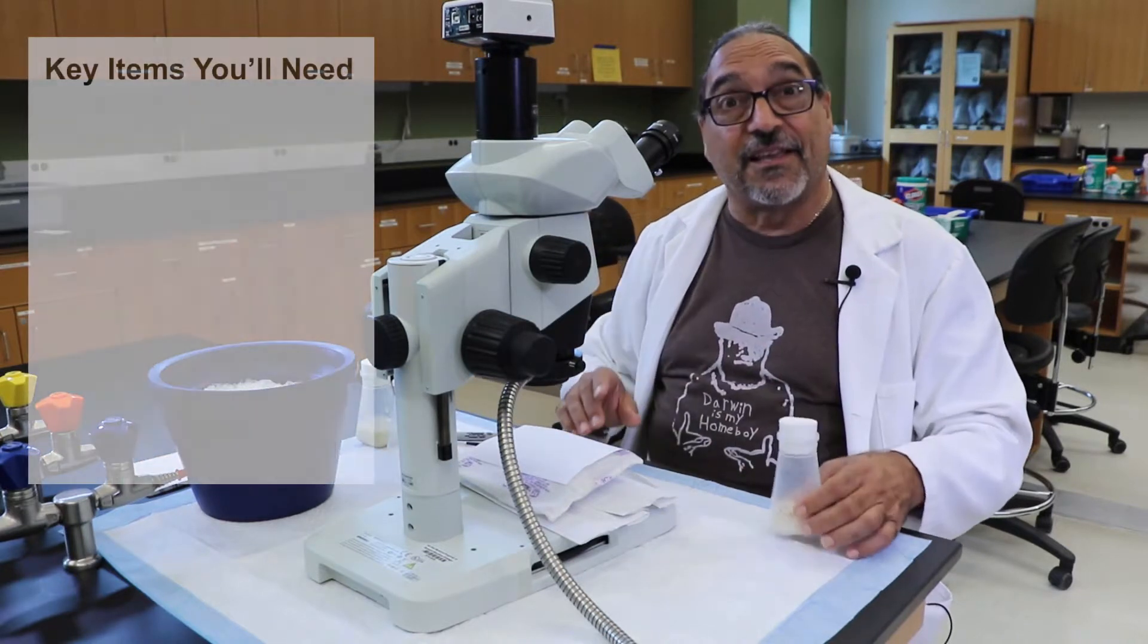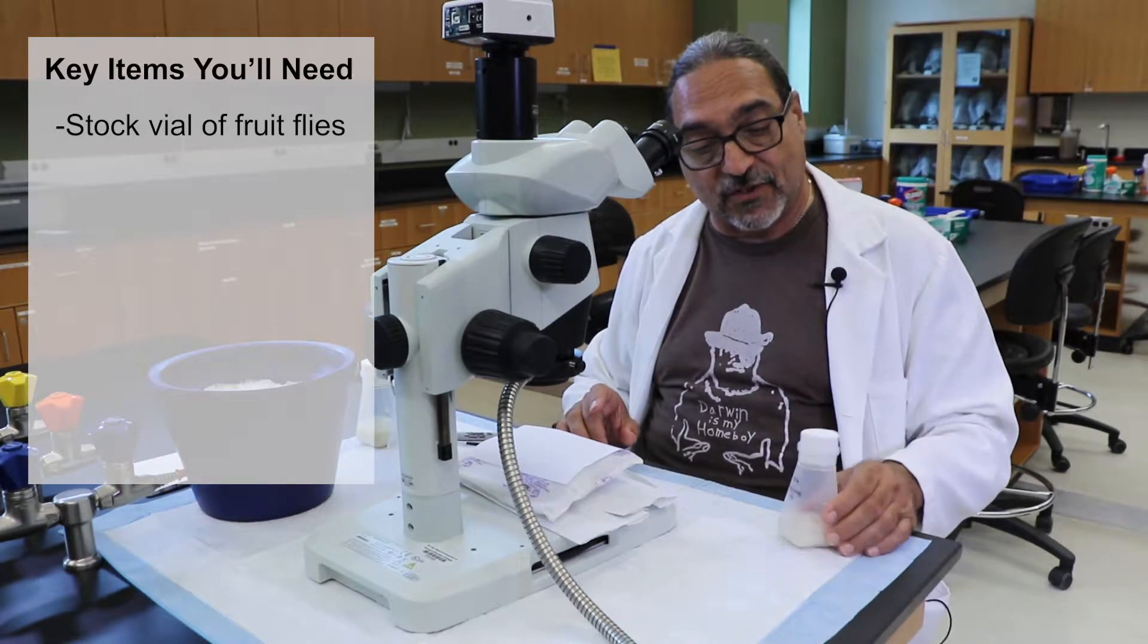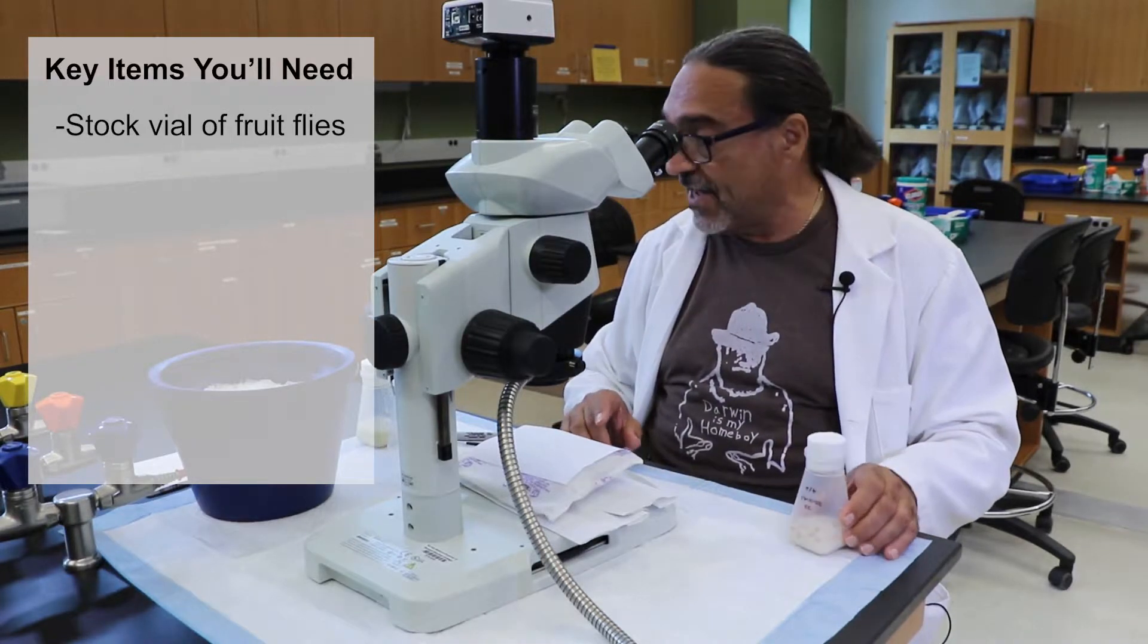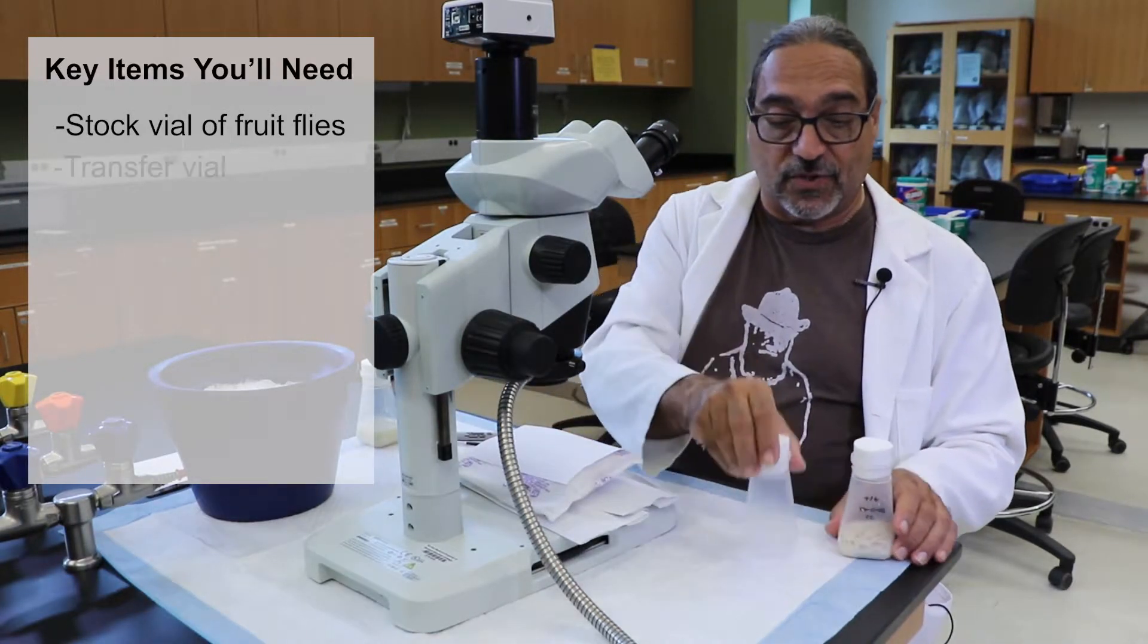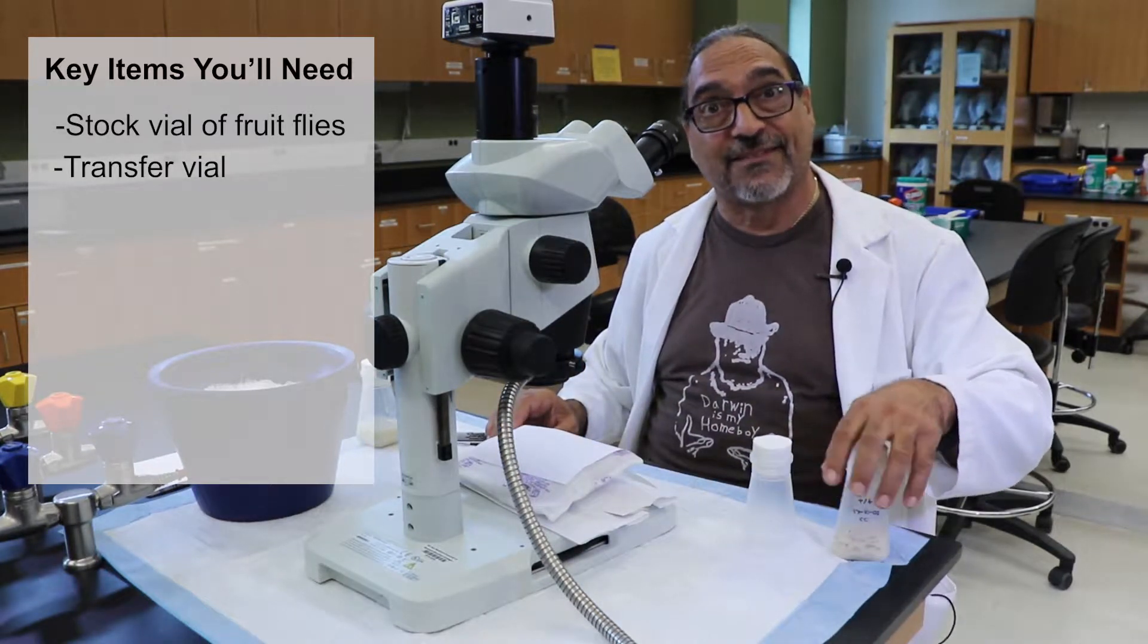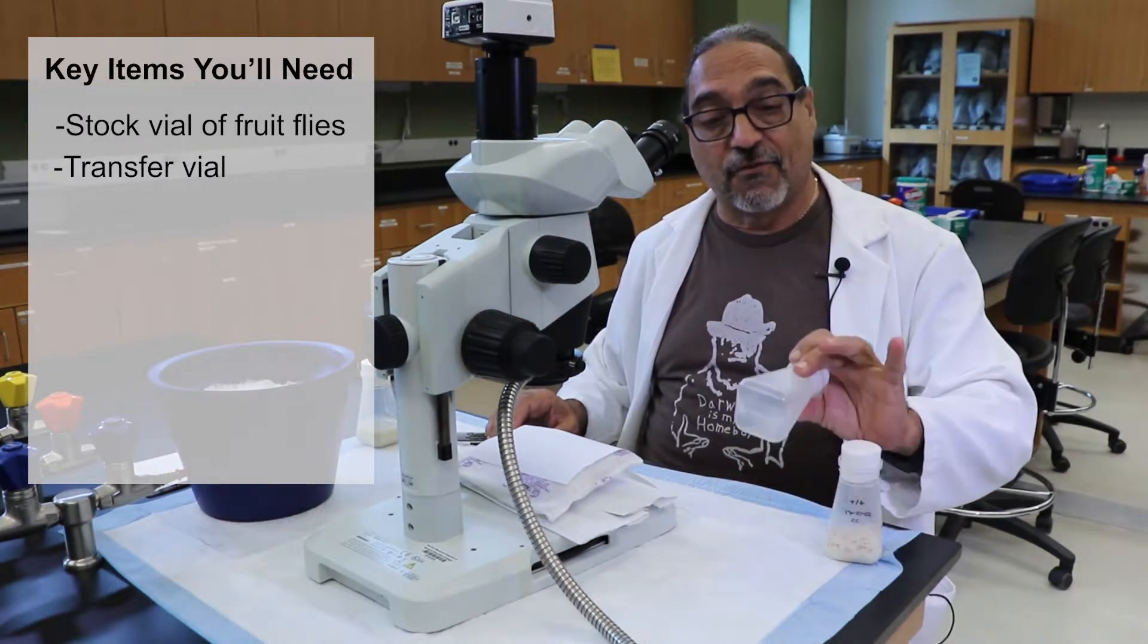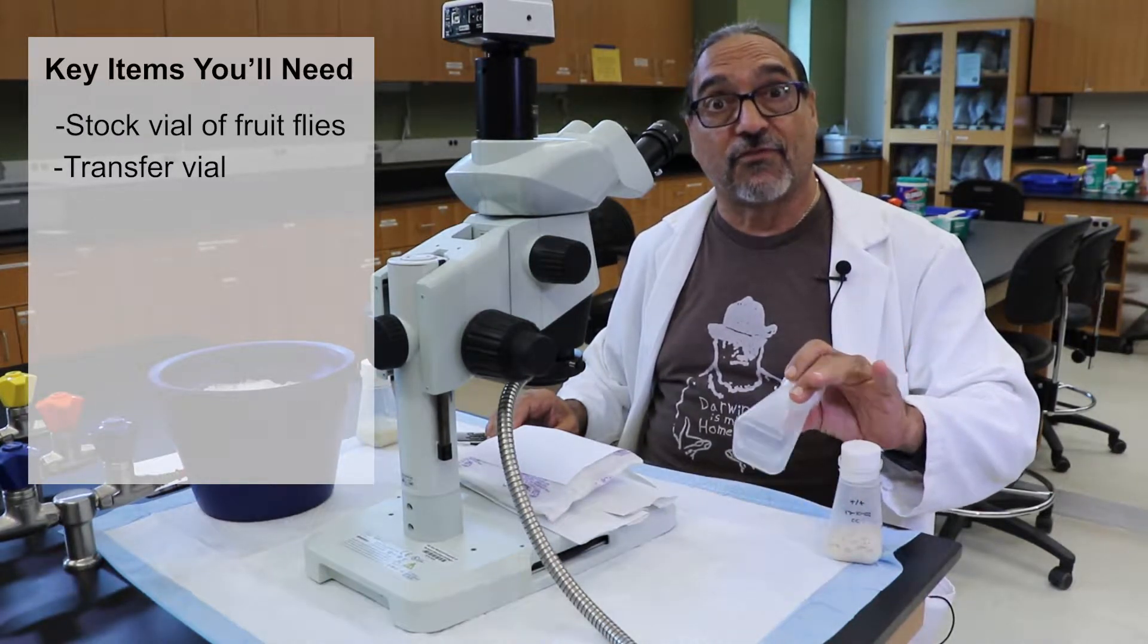Obviously, the first thing you need is a vial, a stock vial of fruit flies. Here we just have our stock vial of wild-type fruit flies. And we'll need a transfer vial. So we normally would transfer the fruit flies from the stock vial into the transfer vial. And of course, we need to be able to put them to sleep.